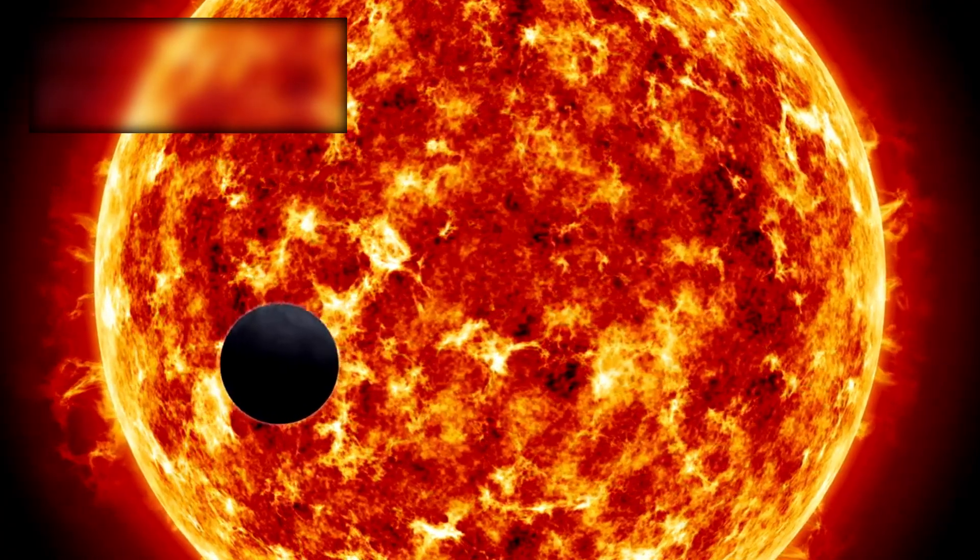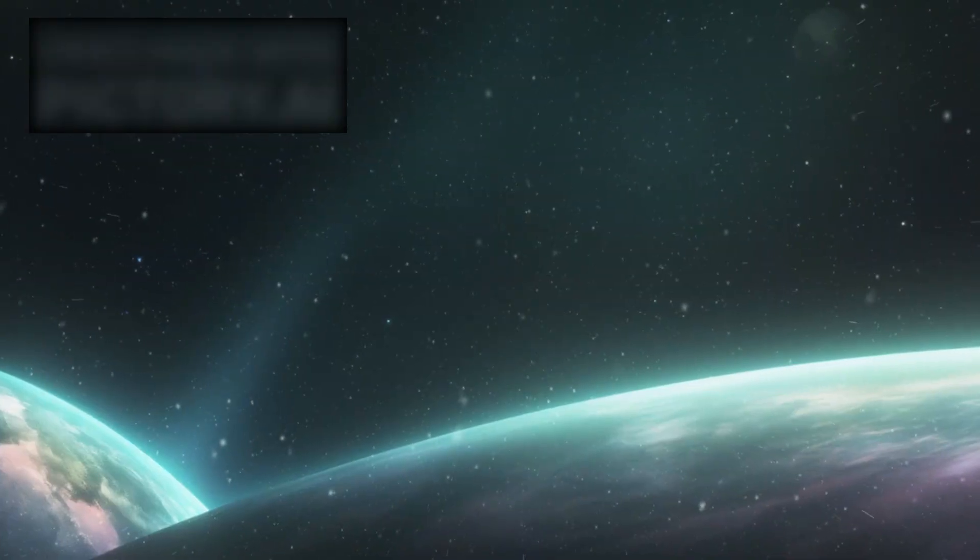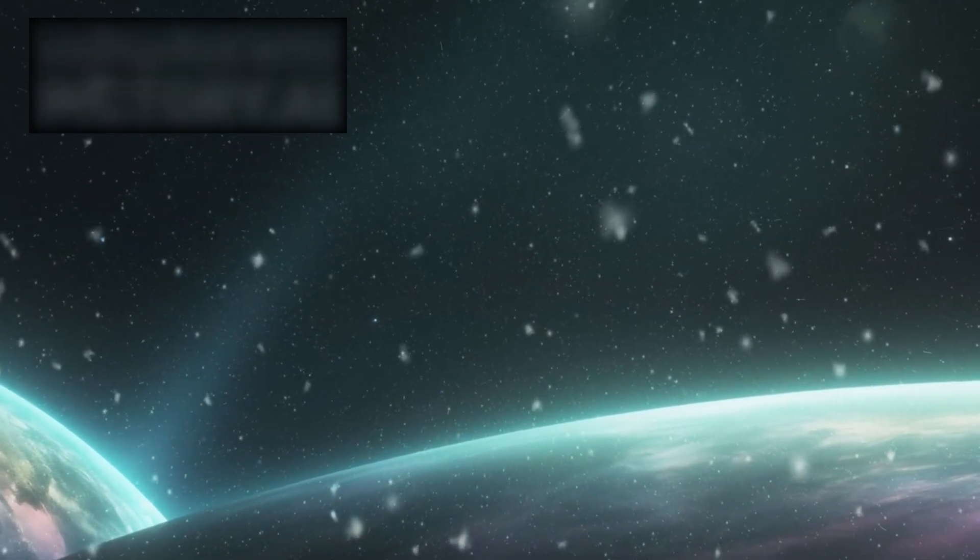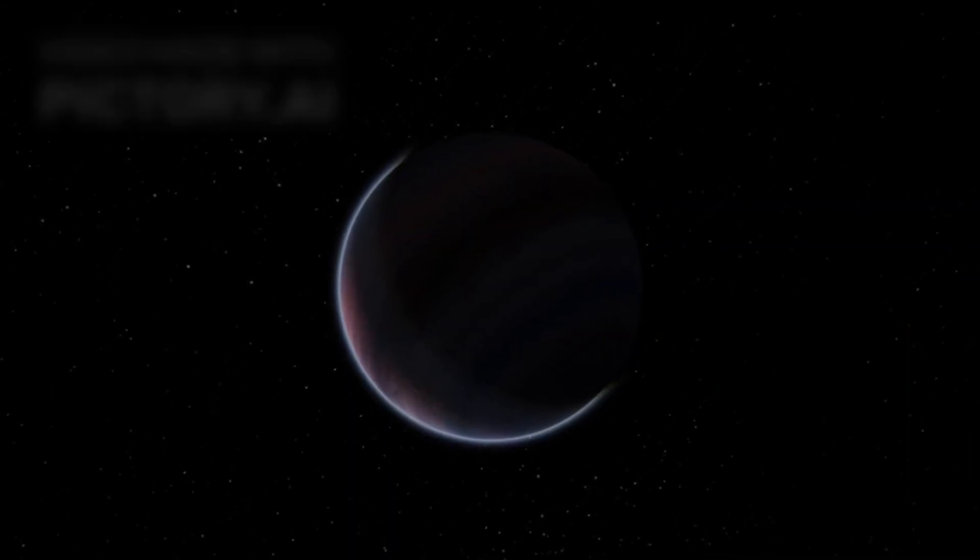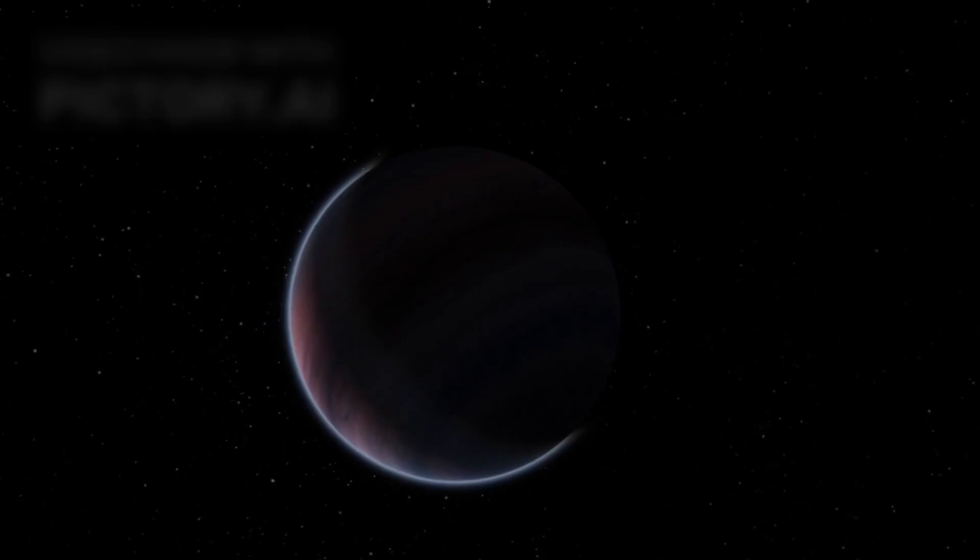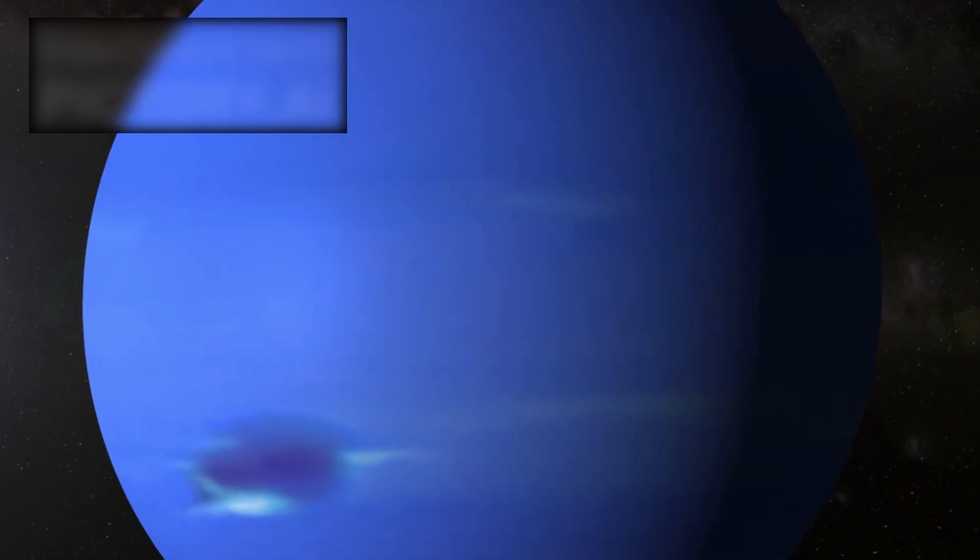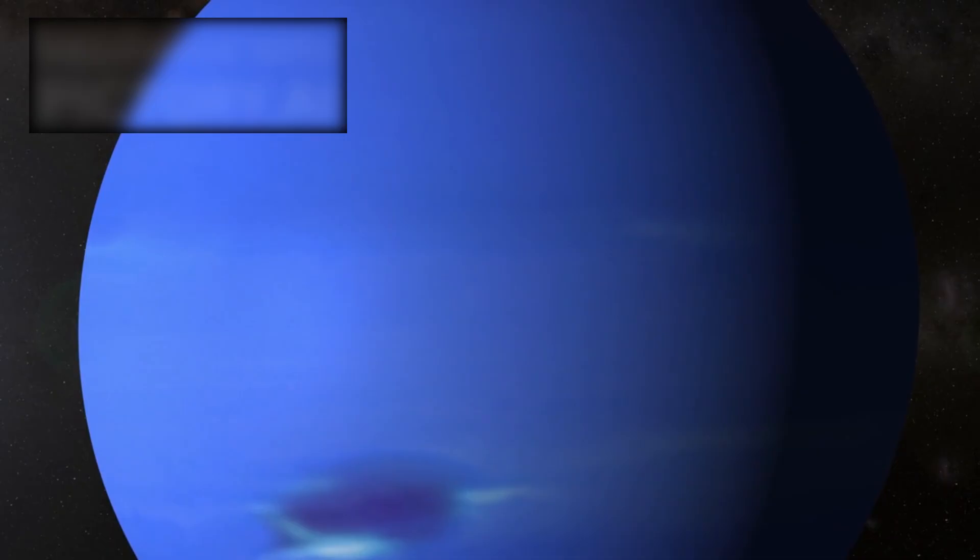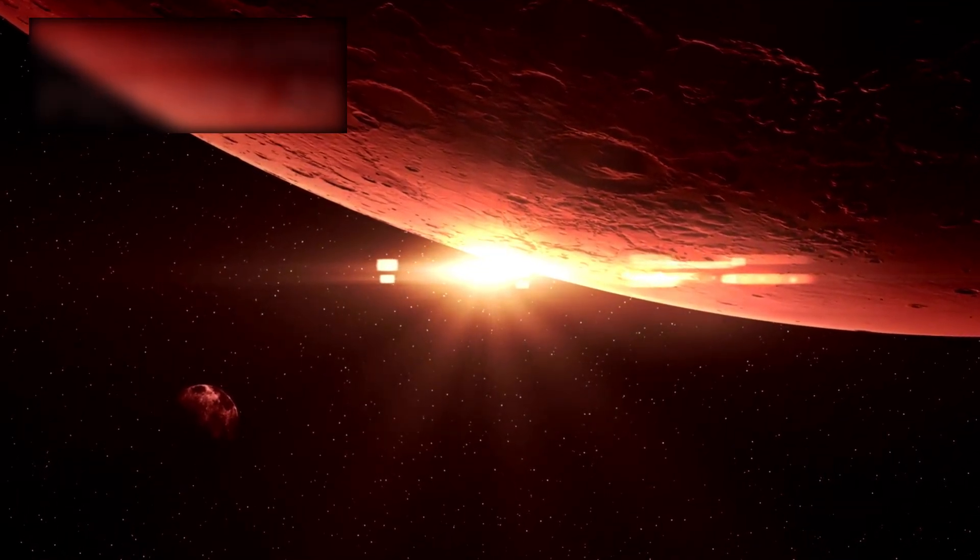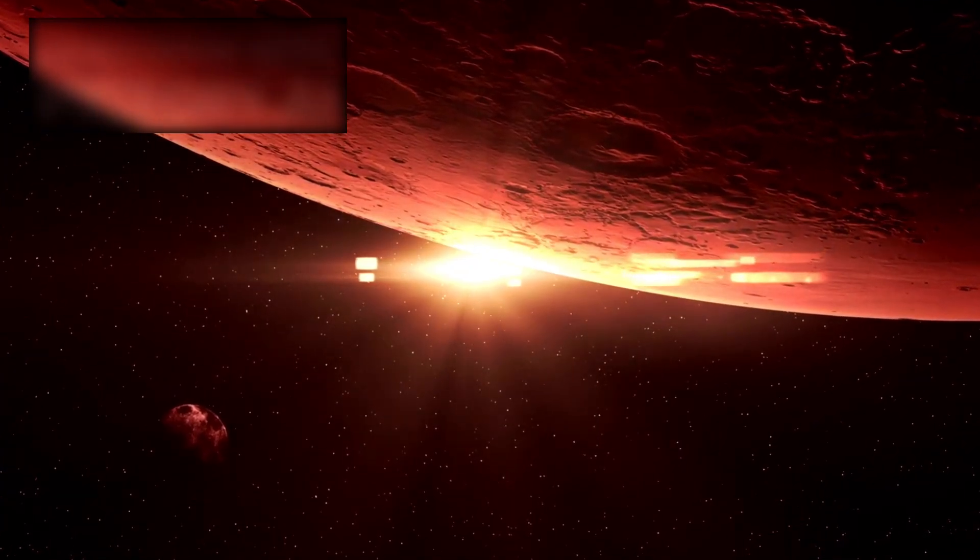But Proxima b is only one chapter in a much larger story. The discovery of thousands of exoplanets has revealed a universe more diverse than we ever imagined. There are hot Jupiters, gas giants hugging their stars so tightly that metals could vaporize in their skies. There are Neptune-like worlds with exotic, turbulent atmospheres. And there are rocky planets like our own, scattered throughout the galaxy, some orbiting suns, others dim red dwarfs like Proxima.